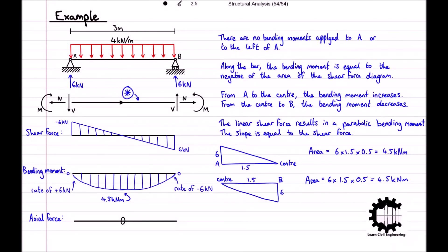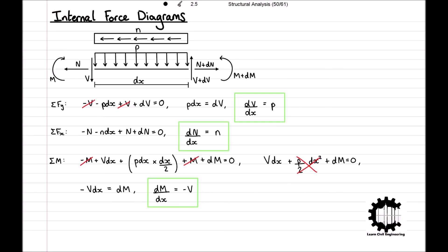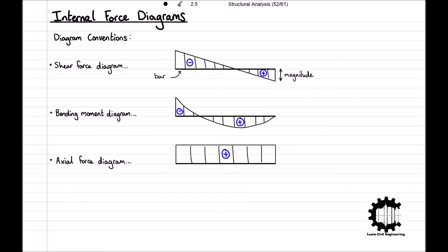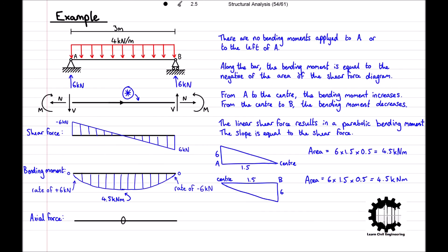So we have seen how to determine the internal force diagrams for a simple structure containing a single bar. To summarise: we introduced the concept of internal force diagrams, along with the principles for determining the degree of each internal force along a bar and the conventions for internal force diagrams. We then worked through an example problem applying the theory to determine the internal force diagrams along a simple structure.